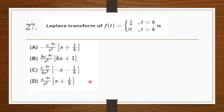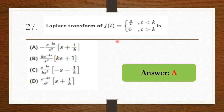The Laplace transform of f(t) = t/k for t < k and 0 for t > k — using the Laplace transform formula, the answer is option A: (1 − e^(−ks)) / (s² · (1/k)).